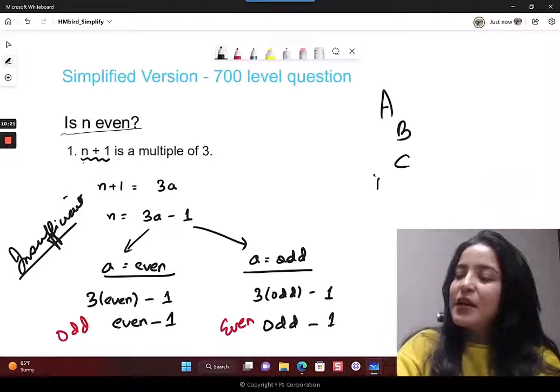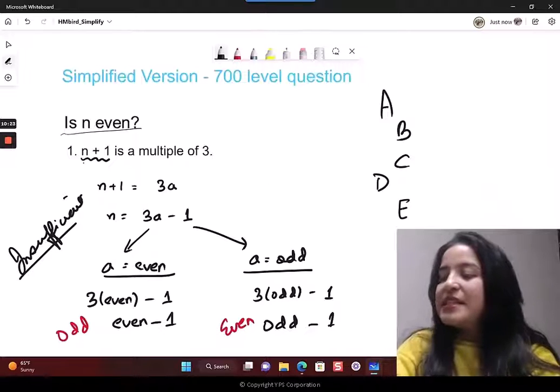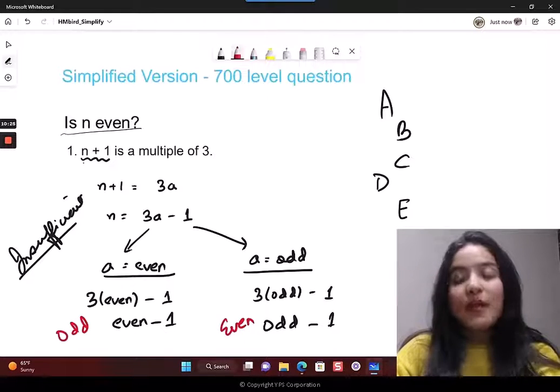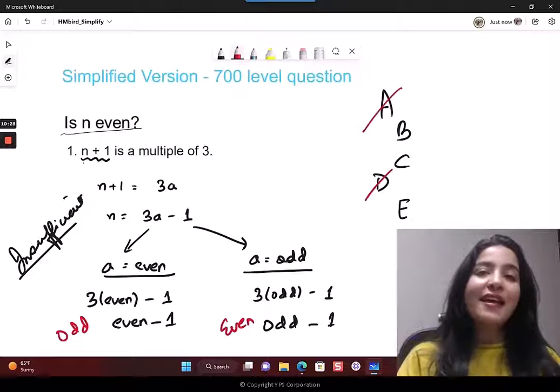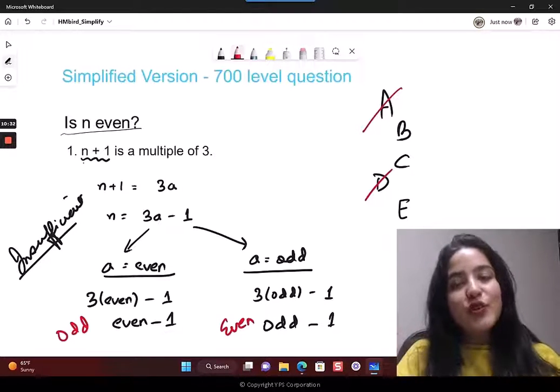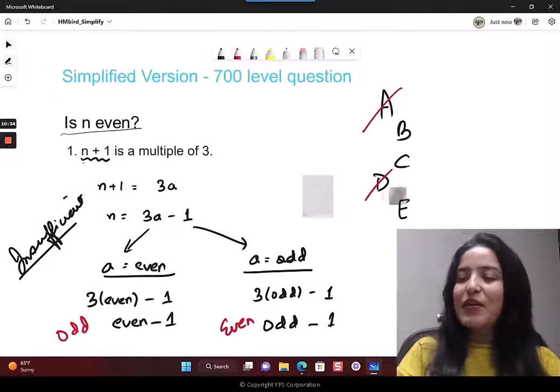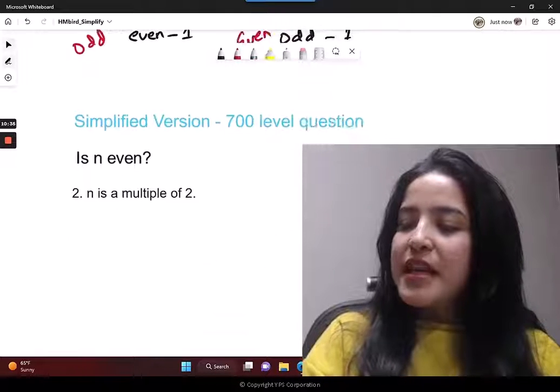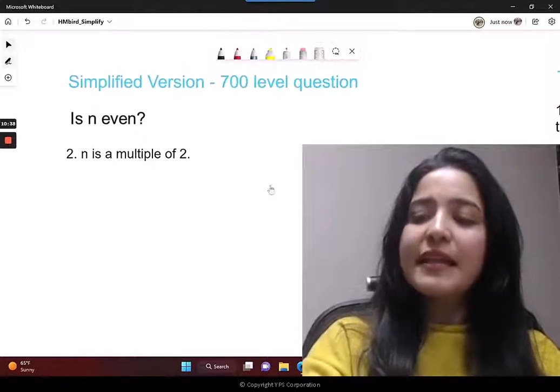So I just showed you how in this case you can't tell whether n is even or odd. So this statement alone is insufficient. If you have choices a, b, c, d, e - since statement 1 alone is insufficient, you reject choices a and d. You're left with three choices.